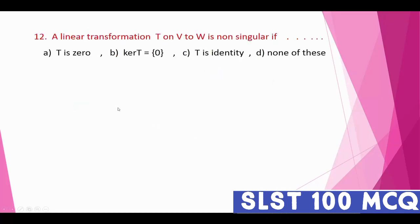Question number twelve: a linear transformation T from V to W is non-singular if — option A: T is zero; option B: kernel of T equals only the zero set; option C: T is identity; option D: none of these. The correct option is B — kernel of T equals only the zero element.